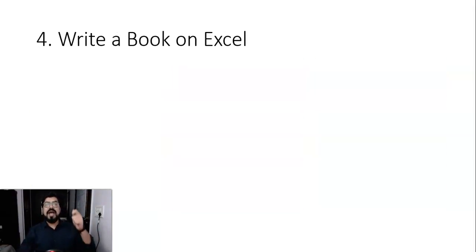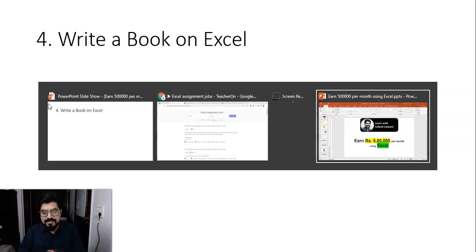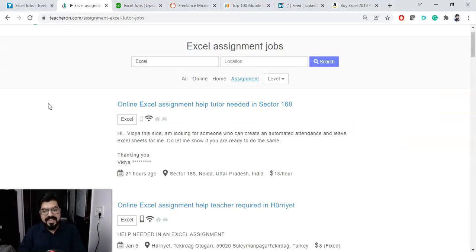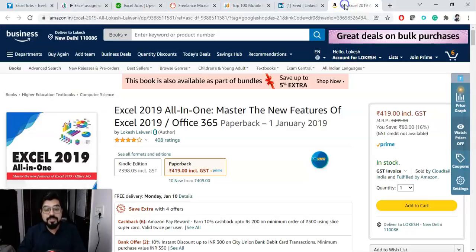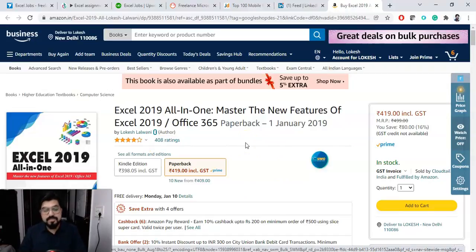Let's talk about the fourth way is to actually write a book on Excel. So once you are comfortable, once you get expertise into Excel, this option is going to be very useful. I, myself, am an author of a book, I'll show you. This is available on Amazon and I am getting a very good revenue. I'll show you how much you can actually earn. You can see this is one of the book which is there and I've got very good ratings so far on this book. It's on Excel.